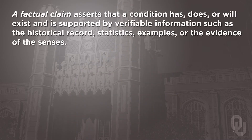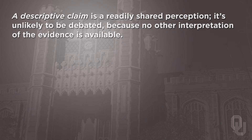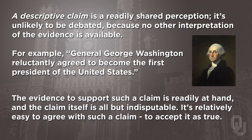A factual claim asserts that a condition has, does, or will exist and is supported by verifiable information such as the historical record, statistics, examples, or the evidence of the census. For example: 'General George Washington became the first President of the United States.' Such claims require little or no documentation to be accepted as true. A descriptive claim is a readily shared perception, unlikely to be debated because no other interpretation of the evidence is readily available. For example: 'General George Washington reluctantly agreed to become the first President of the United States.' The evidence to support such a claim is readily at hand and the claim itself is all but indisputable.